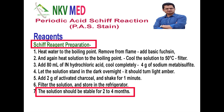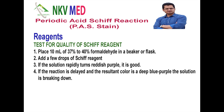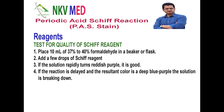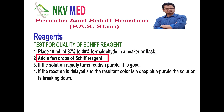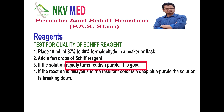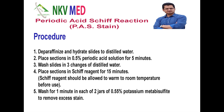To check whether the Schiff reagent is working properly: take 10 ml of 40% formaldehyde in a beaker or flask, then add a few drops of the prepared Schiff reagent. If the solution rapidly turns red or purple, that means you have prepared a good Schiff reagent. If it does not turn or is delayed, the solution has not been prepared well. Now all reagents are ready for PAS staining.